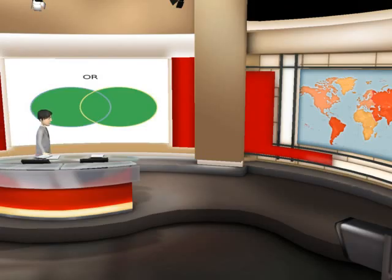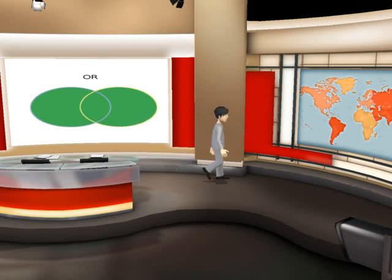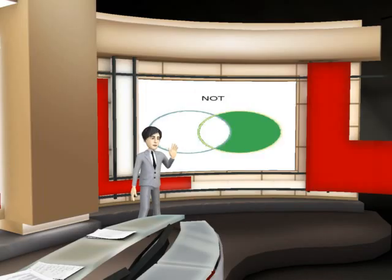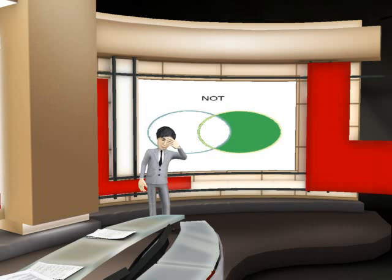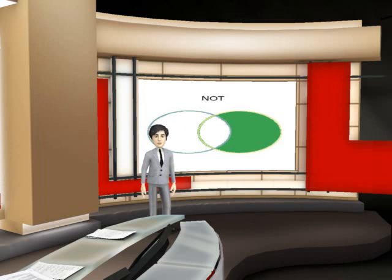Now let's say you find what you want, but there's a lot of extra fluff that you would like to get rid of. That's where NOT comes in. It lets you knock out records that don't apply. For example, if you were searching for Java, the programming language, you might come up with information about coffee. You would then change your search to Java NOT Coffee. In this case, the white areas indicate the results that were not related to the search and got knocked out.